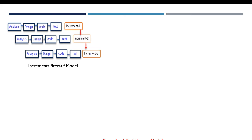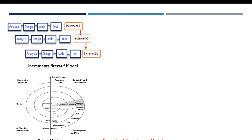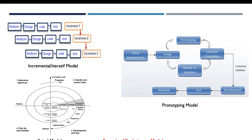As examples of the evolutionary model: first, the incremental-iterative model, where increments are evolved through iteration to compose the final release. Second, the spiral model, which is also evolutionary — prototypes evolve through iteration to generate the final release. Third, the prototyping model, where we iterate through a cycle generating many prototypes until the customer is satisfied, at which point we implement the real release.